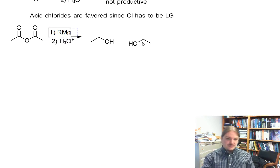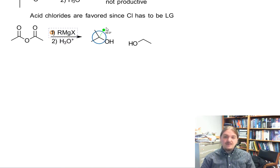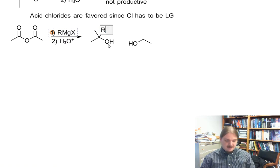If instead of using lithium aluminum hydride, we use a Grignard reagent, the Grignard reagent is going to react with one side of the anhydride to make a tertiary alcohol. The intermediate ketone also reacting with Grignard reagents.